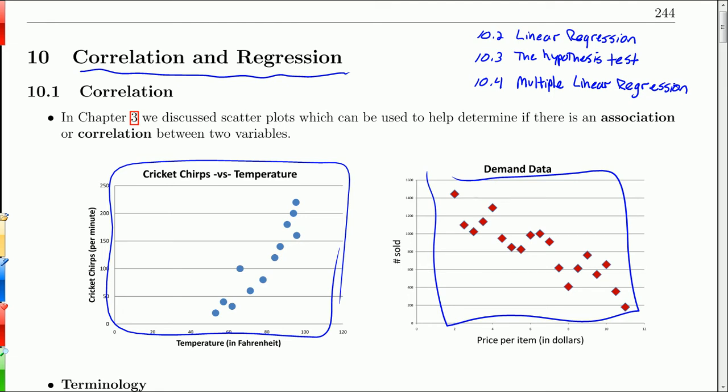And then in Chapter 10.2, we will go into linear regression, which says, if it does follow a line, what is that line? And how do we use it to make estimations from that line?